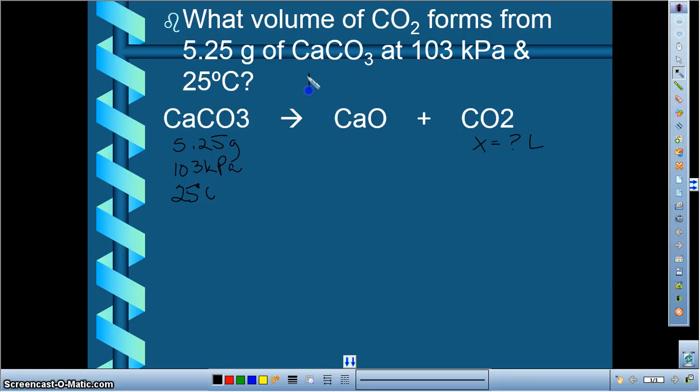Because remember that our Pregnert formula, PV equals NRT, needs to include pressure, volume, moles, temperature, and R, and one of these missing. So in this case, we have everything we need to be able to calculate this, except for number of moles, which we can get.